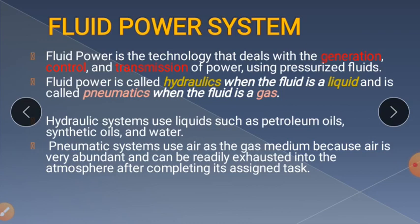Nowadays in industries wherever we are using power, there are mainly two types of transmission: one is mechanical transmission and another is electrical transmission. Transmission is nothing but transmitting power from one point to another. In mechanical systems we use shafts, gears, chains, belts, etc. to transmit rotary energy. In electrical transmission we use transformers, coils, and many electrical equipments to transmit power in electrical form.